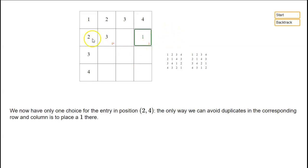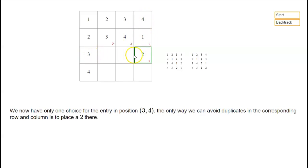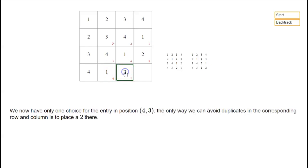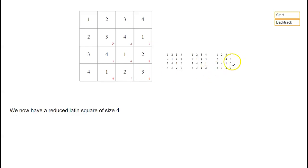If we choose a 3 there, then looking at the next slot we can't have 2, 3, or 4, so we have to have a 1. And then we can't have 1, 2, or 3, so we have to have a 4. Now we can't have 1, 4, or 3, so we have to have a 2. And then we can't have 2, 3, or 4, so we have to have a 1. Here we're forced to have a 4, then forced to have a 1, forced to have a 2, forced to have a 3. So we get no more choices after we chose 3 here, and we end up with another reduced Latin square of size 4.